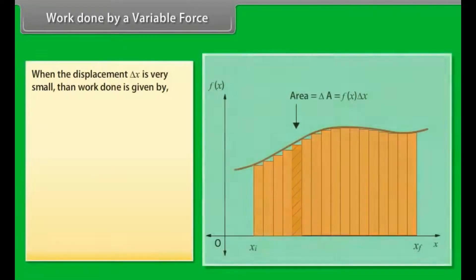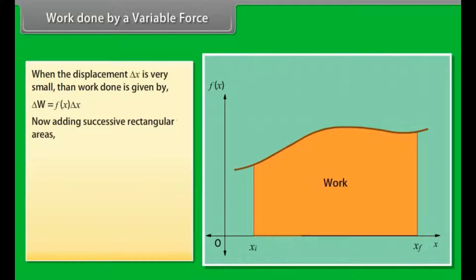Work done by a variable force. When the displacement Δx is very small, then work done is given by Δw = Fx·Δx. Now adding successive rectangular areas, total work done is given by W ≈ Σ(from xi to xf) of Fx·Δx.